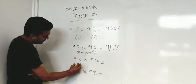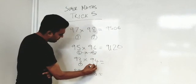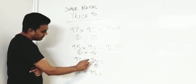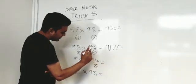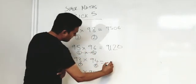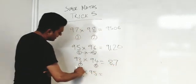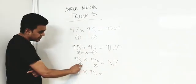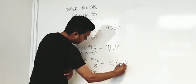How close is 93 to 100? 7 away. How close is 94 to 100? 6 away. Now if we're taking 7 from 94 or 6 from 93, we're left with 87. That's the first two digits. Now you've got 7 and 6. What's 7 times 6? It's 42.